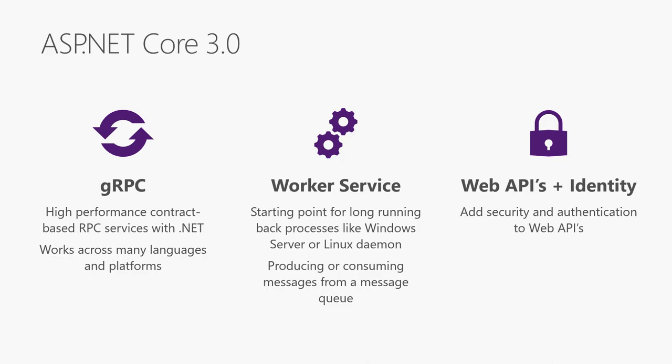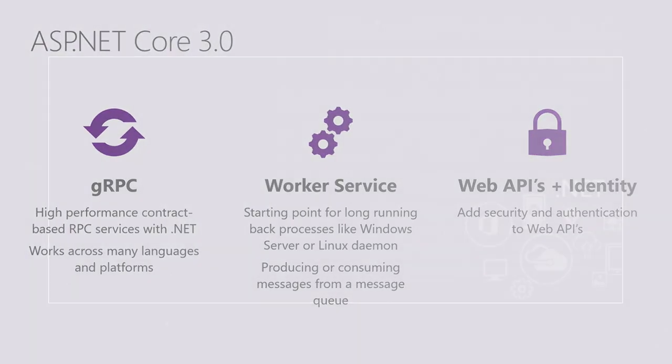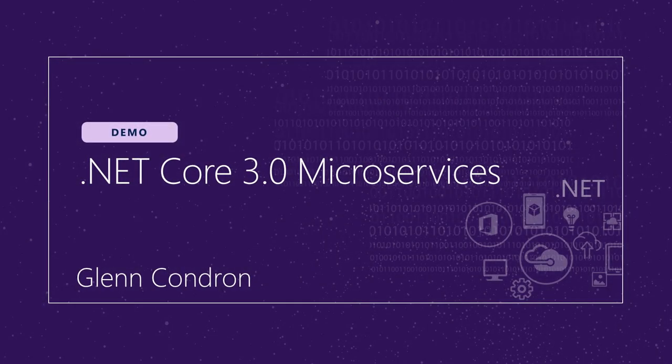We also have worker services — long-running applications that handle requests and responses. There's a first-class template inside Visual Studio in .NET Core 3 for building worker services, and you get all the same features: configuration, dependency injection, logging — everything .NET Core brings. And finally, we've worked with a partner to secure your API endpoints using identity server. Now, Glenn Condron is going to come on stage and build a .NET Core 3 microservice hosted in Azure.